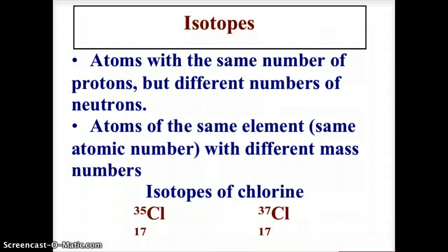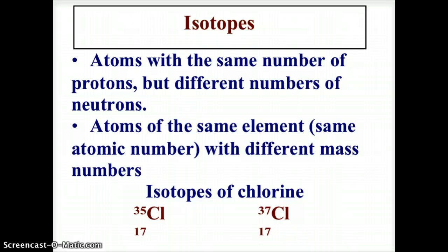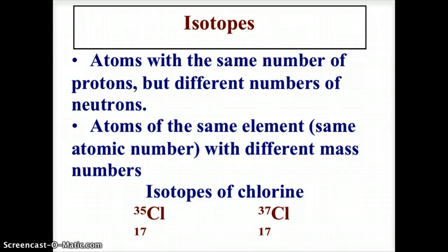Let's start by talking about isotopes. Isotopes are atoms that have the same number of protons as usual but a different number of neutrons. Protons define the atom - chlorine, for instance, has to have 17 protons. If it had 18 protons it would be argon. So isotopes are atoms of the same element with different mass numbers.